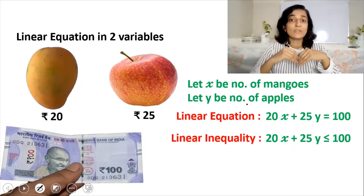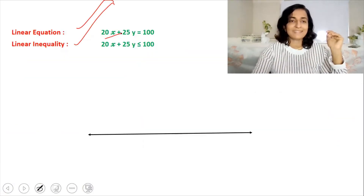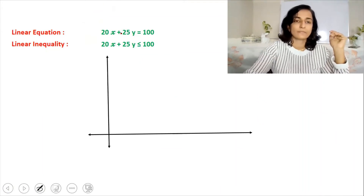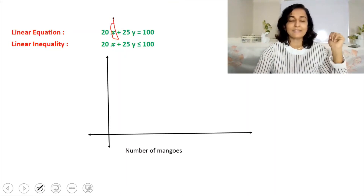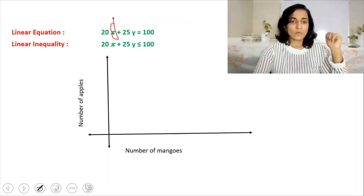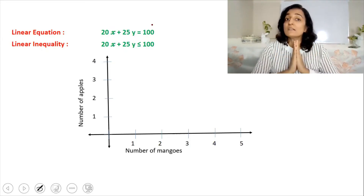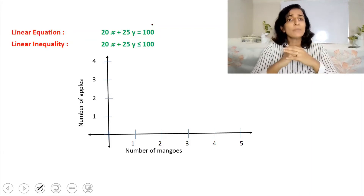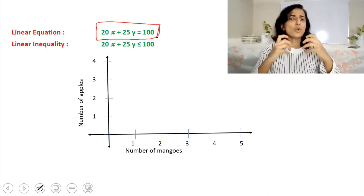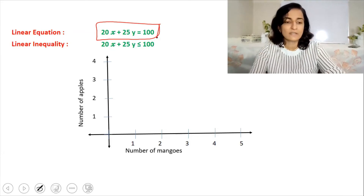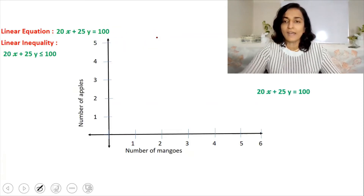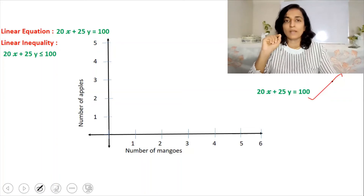The next step is to record the linear equation on a graph paper. We have the x-axis and the y-axis. x is the number of mangoes, so we write 'number of mangoes' against the x-axis and 'number of apples' against the y-axis. A linear equation is always a straight line, and to draw a straight line, only two points are required. So how do we find the two points that satisfy this equation? The linear equation is 20x + 25y = 100.